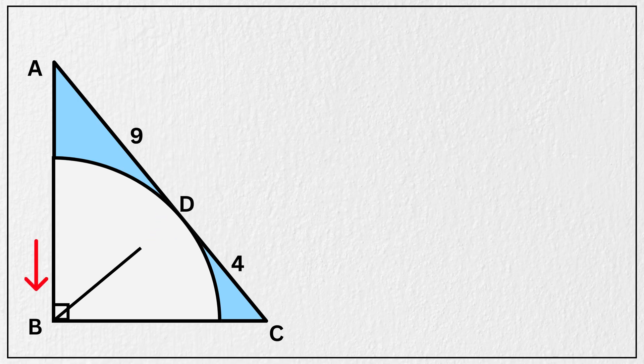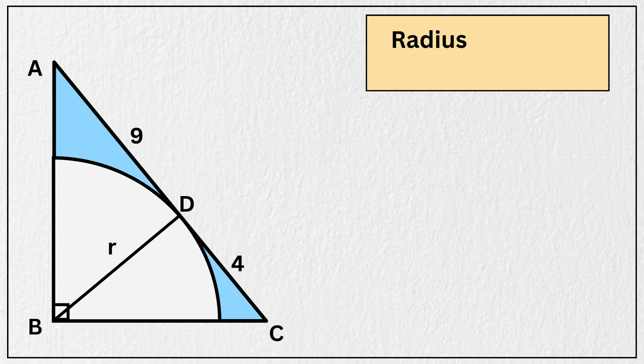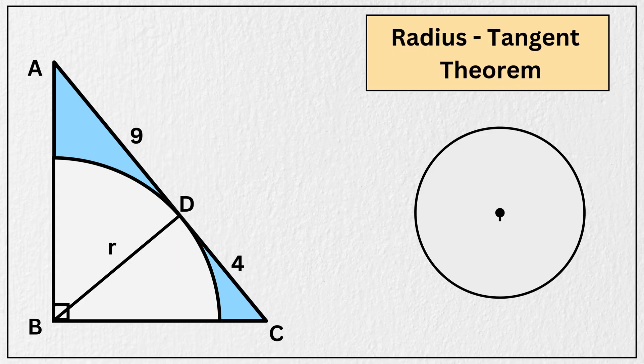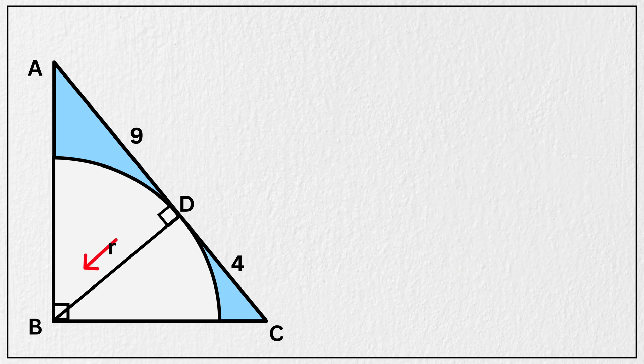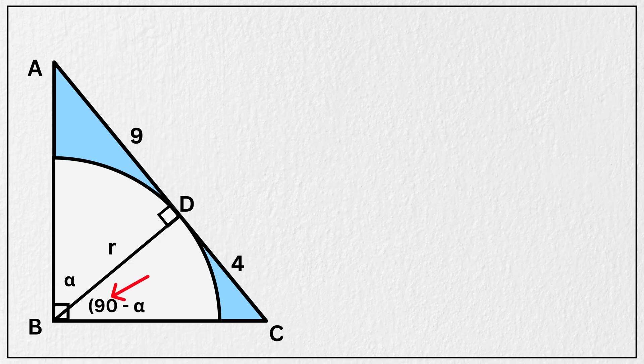Now let's draw a radius from vertex B to point D like this. We know that according to the radius tangent theorem, whenever a radius is drawn to the point of tangency of a circle, that radius is always perpendicular to the tangent, which means this angle here is 90 degrees. Now let this angle be alpha. That means this adjacent angle must be 90 minus alpha.